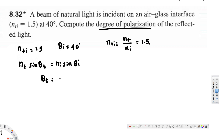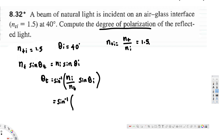Rearranging the equation, θ_t equals sine inverse of (n_i over n_t) times sine θ_i. Now let's plug in the values: sine inverse of (1 over 1.5) times sine 40 degrees. If you calculate this, you get θ_t equal to 25.40 degrees. This is useful because we'll use Fresnel's equations next.